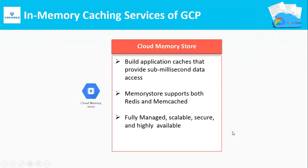Next is Caching Services of GCP. We have Cloud Memory Store, which is used to build application caches that provide sub-millisecond data access. This Memory Store supports both Redis and Memcached services.